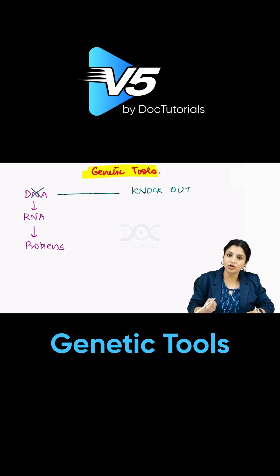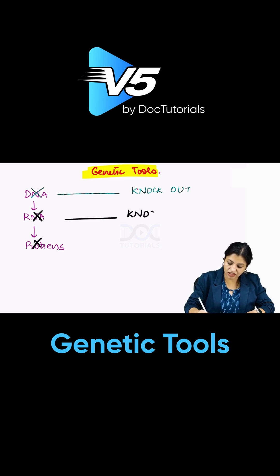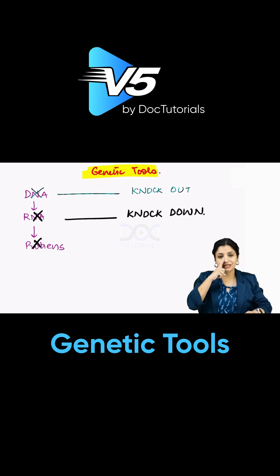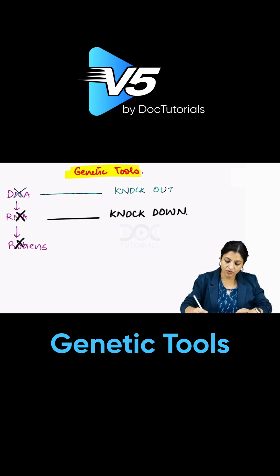Or you can cut the RNA or decrease protein synthesis. Whenever you change the RNA expression, this is called knockdown technology. So genes can be altered either by cutting the DNA or altering the RNA. Knockout technology is a permanent modification.